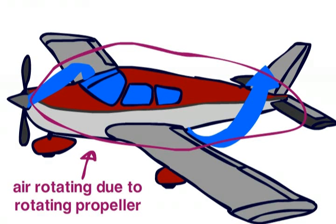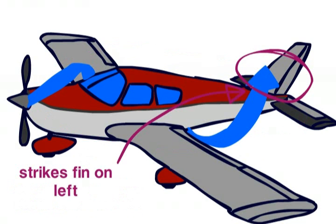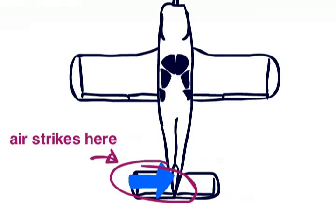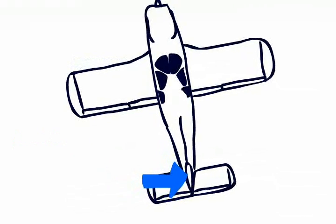The propeller also causes the airflow to rotate around the aircraft. Most propellers rotate clockwise, and therefore the airflow strikes the fin on the left, producing a sideways force on the fin from the right. This will result in a left yaw.